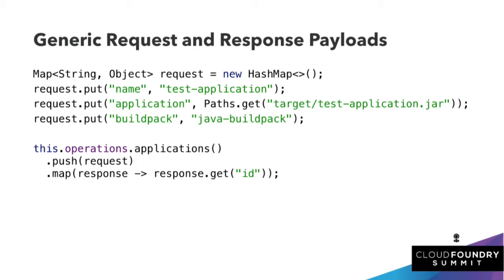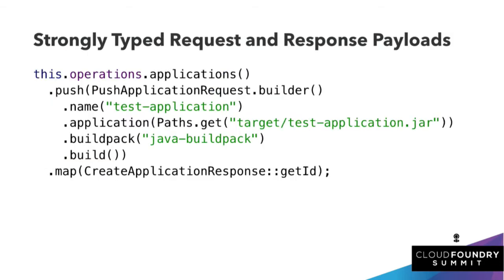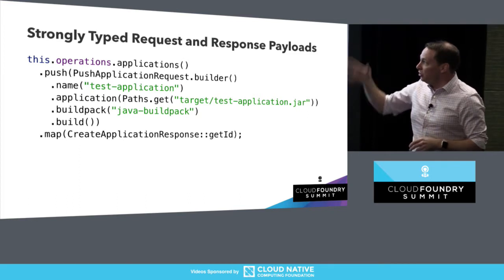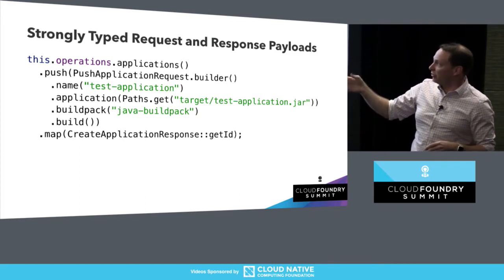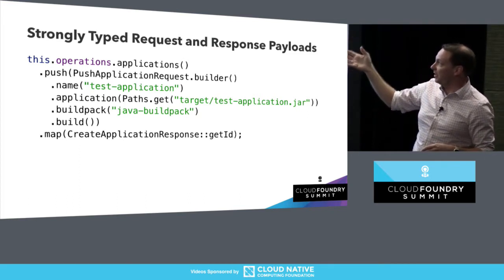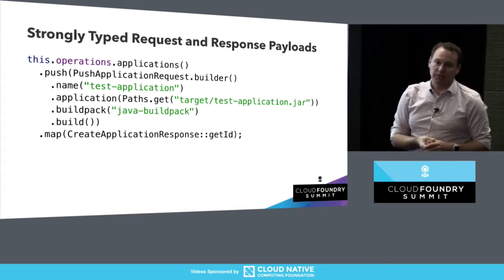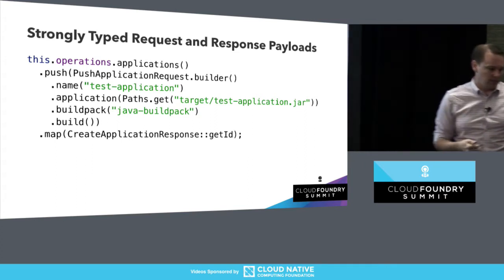What we wanted to do was write a Java client on top of it — a language binding that makes things much more strongly typed and much more obvious as to what's going on. Now you know what the name should be; you don't need to know what the payload key is. You write code that is much more understandable: push this particular application, locate it here, name it, use this build pack, and map the response back to get its ID.